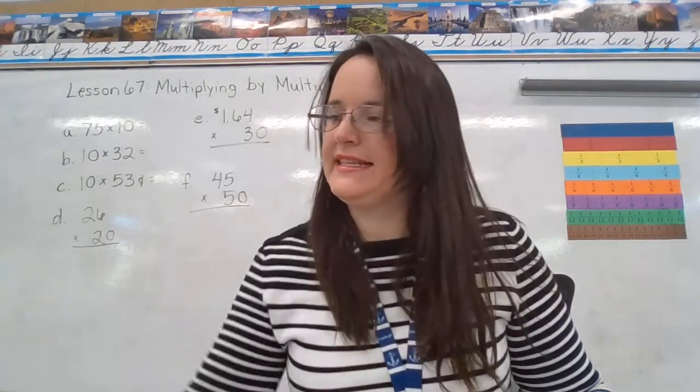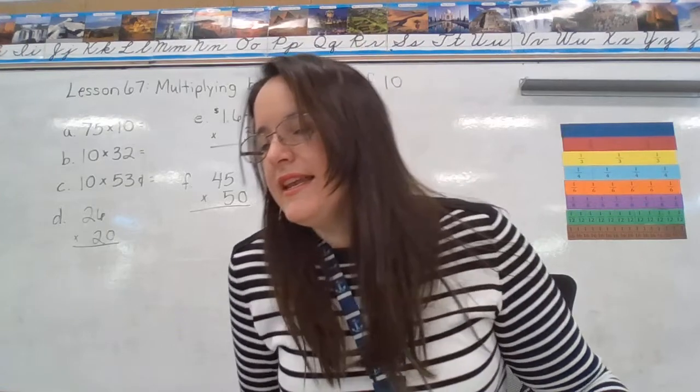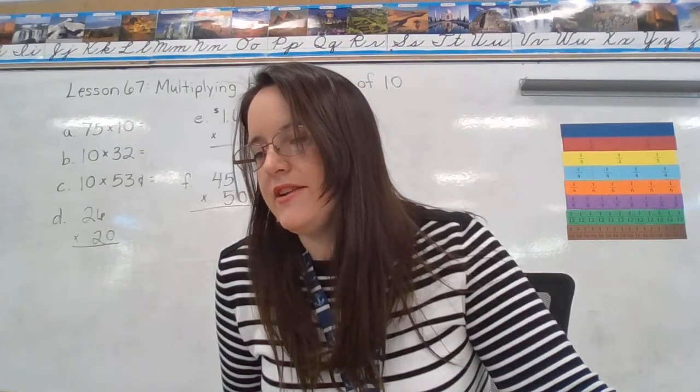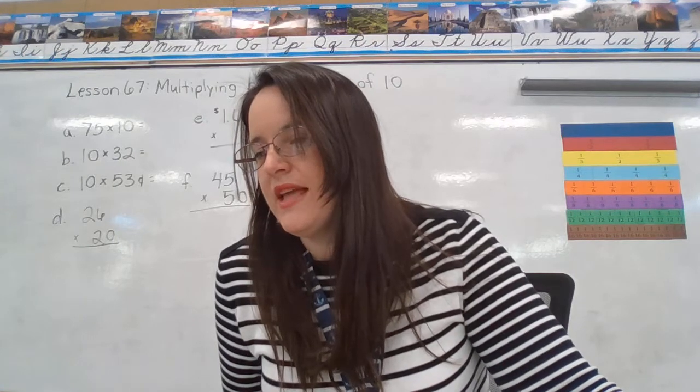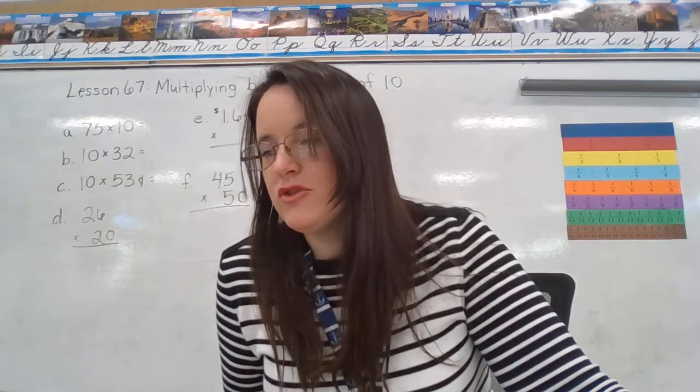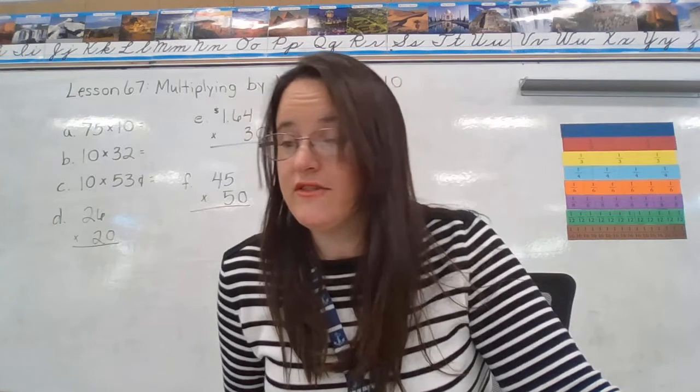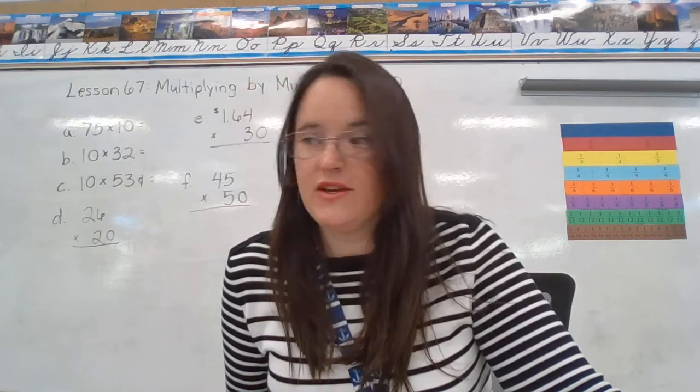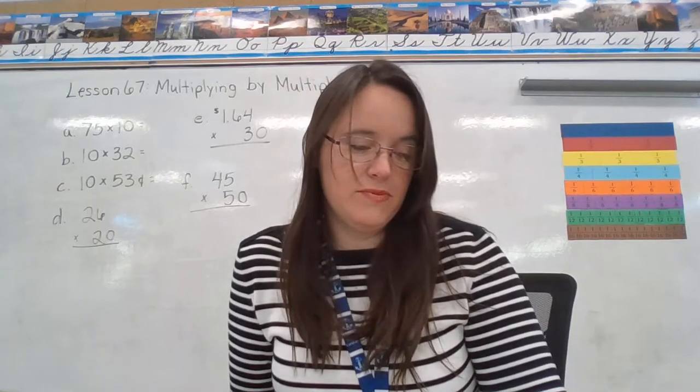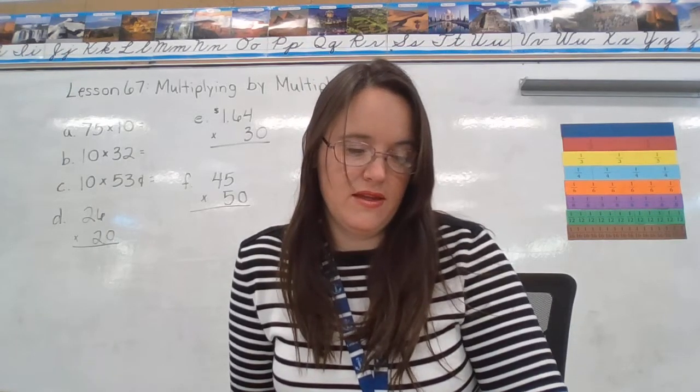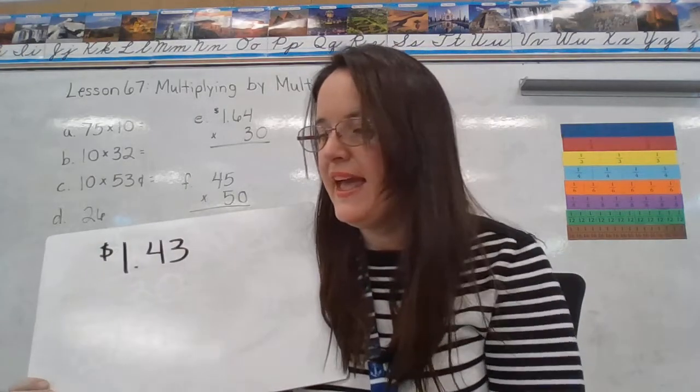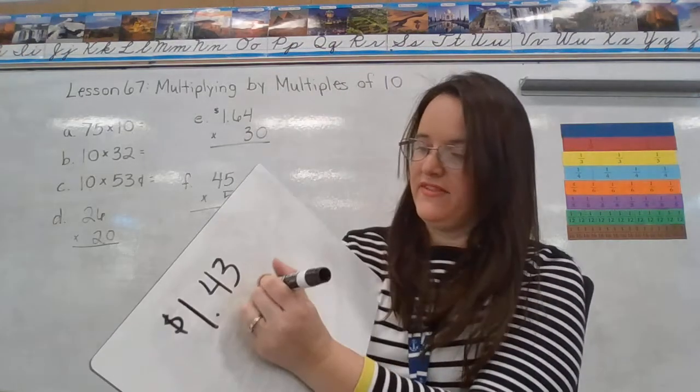All right, our next example says a number of school support staff ordered 23 ring binders for the school bookstore. If the cost of each binder was $1.43, what was the total cost of the order? So, each binder is $1.43. I'll write that down on my whiteboard here.